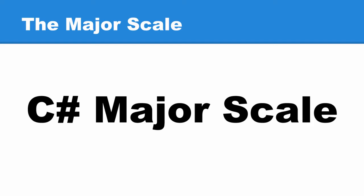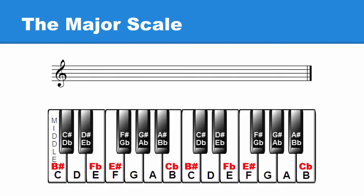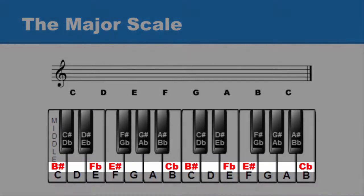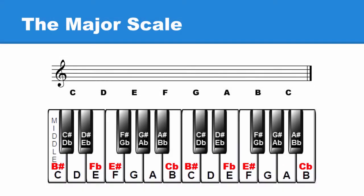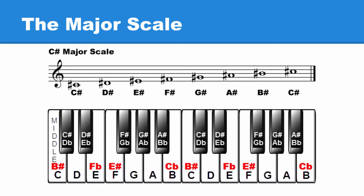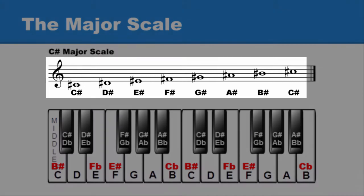Let's look at the C sharp major scale first. Since both the C sharp major scale and the C flat major scale use the musical alphabet starting on C, let's write that below the staff. We're going to work backwards this time. We'll start with the completed C sharp major scale notated on the staff with the note names written below. Notice every note has a sharp in the C sharp major scale.